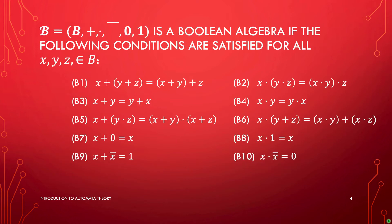We are going to say that such a structure is a Boolean Algebra if the following conditions are satisfied for all x, y, z from B. We have these ten properties. B1 and B2 are essentially saying that addition and multiplication are associative operations — x plus (y plus z) equals (x plus y) plus z, and similarly for multiplication. These two properties are referred to as associativity.